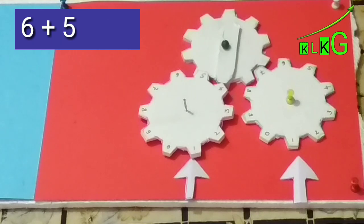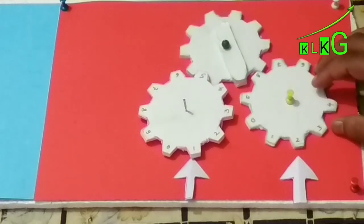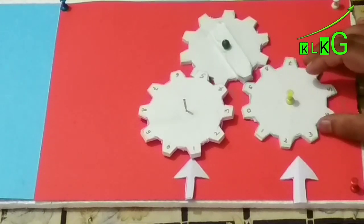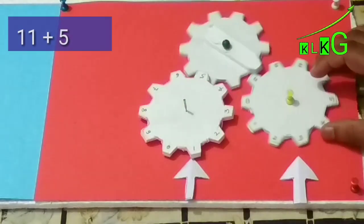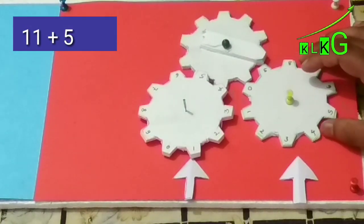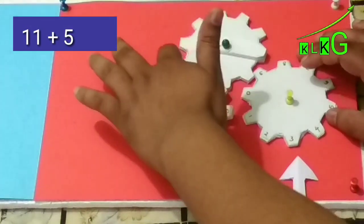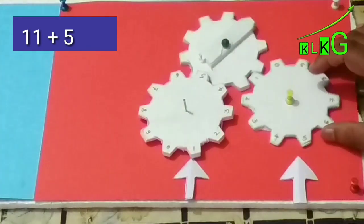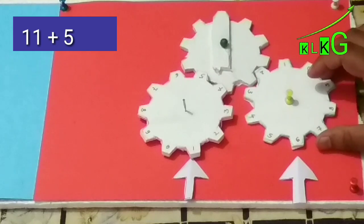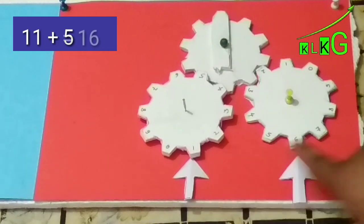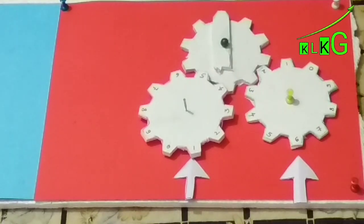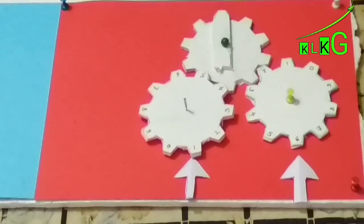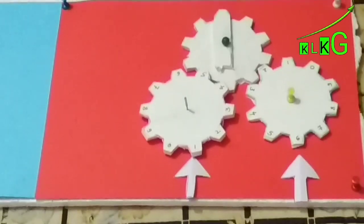You can now see we will add eleven plus five. So five times we have to rotate the right side circle: one, two, yeah, three, four, and five. So here we get sixteen. I want to tell you one more thing that the edges should be fixed with each other so that you won't face any trouble.